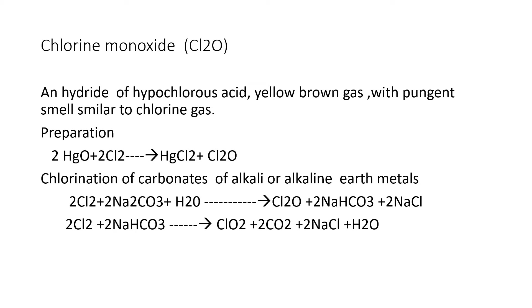Preparation of Chlorine Monoxide. You can prepare it by treating freshly prepared Mercuric Oxide with Chlorine gas. It gives Mercuric Chloride plus Chlorine Monoxide.